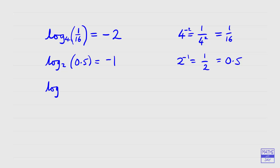Now let's look at a root. We'll stay with base 2, and we'll have the cube root of 2. We're looking at writing 2 to the power of something as equivalent to the cube root of 2. Hopefully you'll remember that 2 to the power of one third is the cube root of 2. Similarly, a square root would be a power of a half. So our answer is one third — the log to base 2 of the cube root of 2 is one third.